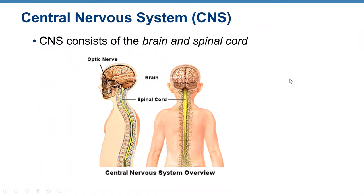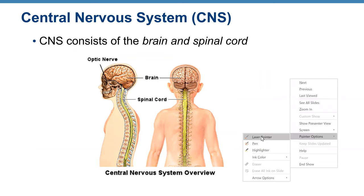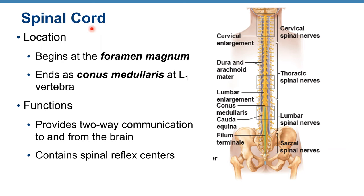The central nervous system, or CNS, consists of the brain and spinal cord. The spinal cord begins at the foramen magnum and ends at the conus medullaris at the L1 vertebra. The spinal cord doesn't go all the way down the vertebral column — we still have five lumbar vertebrae, sacrum, and coccyx. The spinal cord provides two-way communication to and from the brain and contains spinal reflex centers.